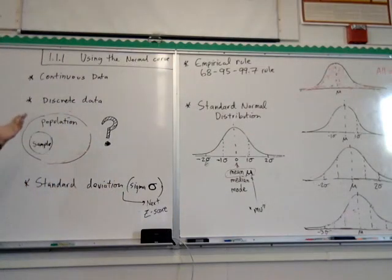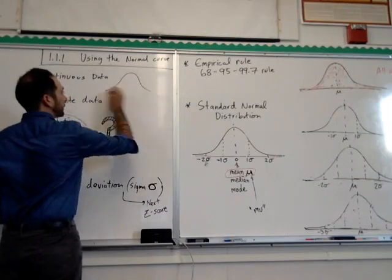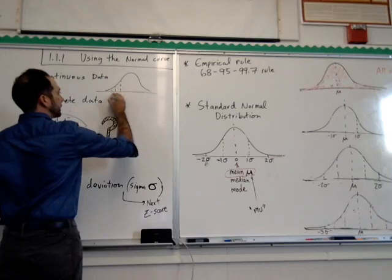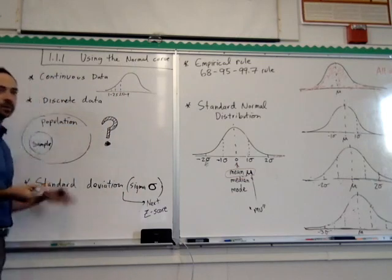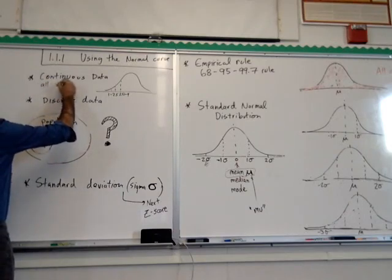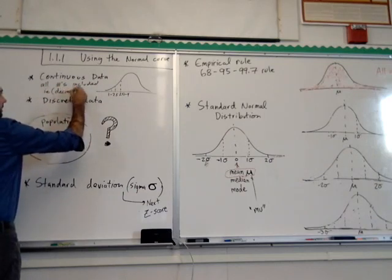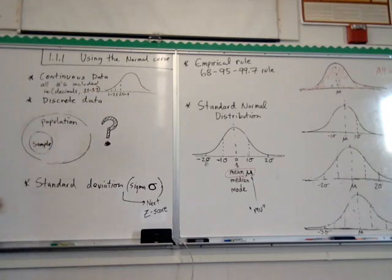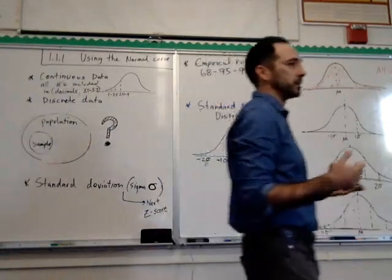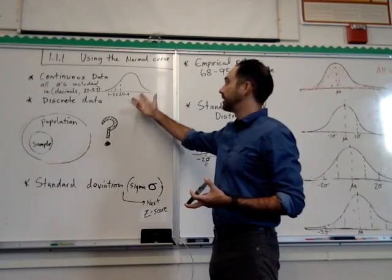First, looking at continuous data — we want to break down the two basic forms of data. Continuous data is where all numbers are involved. So if we have our normal curve here, there are going to be intervals. This might be 1 to 2.5, and this segment here would be 2.51 to 4, and so on. With continuous data, all numbers are included — decimals are included. An example interval would be 3.4 to 5.7. So if you're 64 and a half inches, we'd be able to make intervals that allow that value to be on a normal curve.